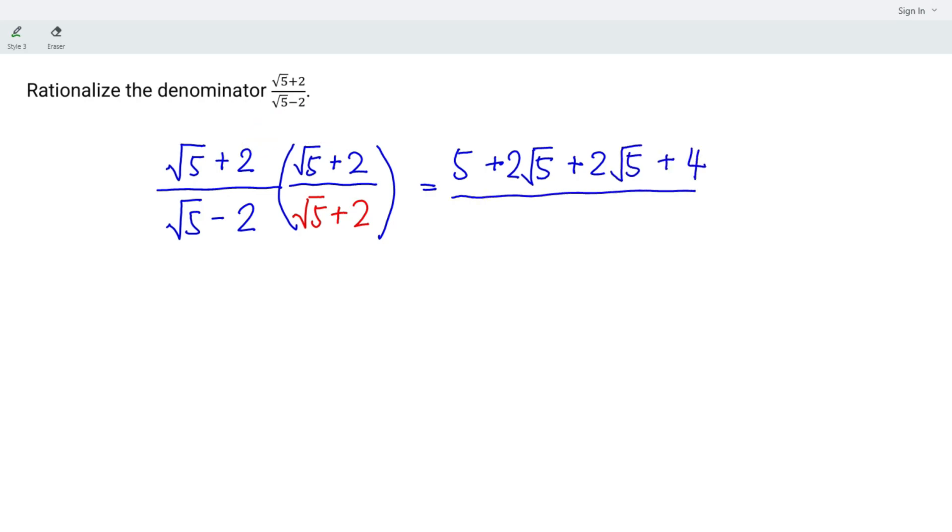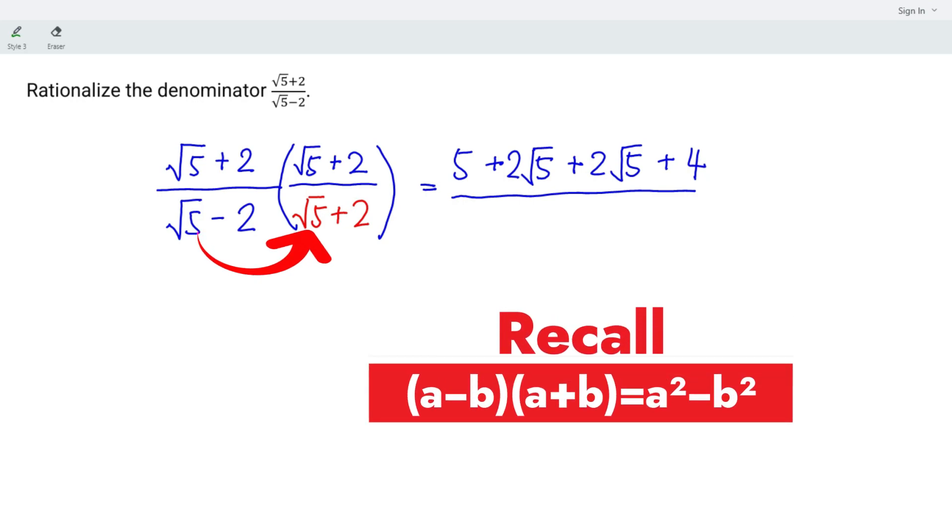And for the denominator, root 5 multiplied root 5 is 5. Negative, positive, negative. 2 multiplied 2 is 4. Let's simplify.